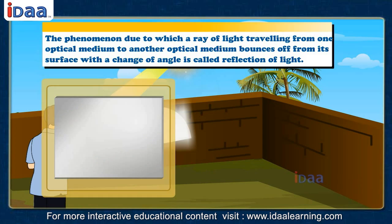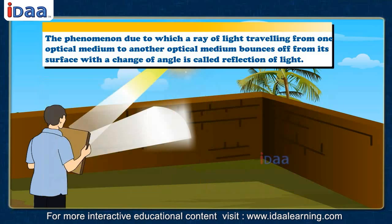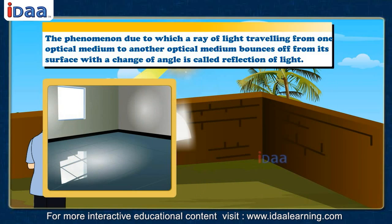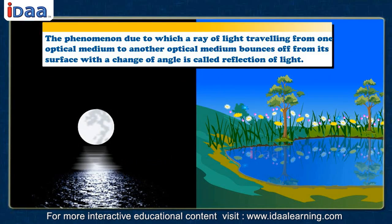Any smooth polished surface that can turn rays of light back into the same medium is called a mirror. A looking glass is the best example of a mirror. Note that besides mirrors, other smooth polished surfaces also reflect light — polished floors and tabletops reflect light. You must have seen the reflection of the moon or trees on clear, still water.